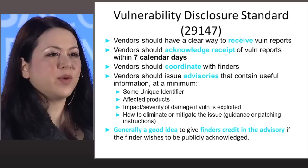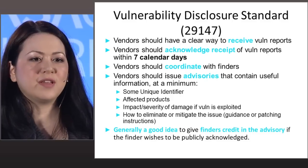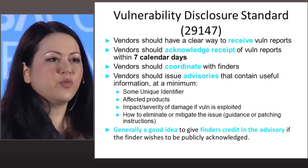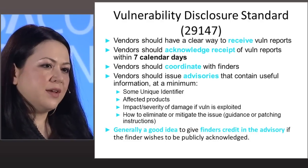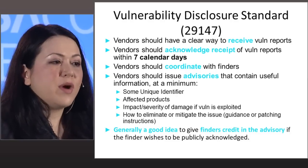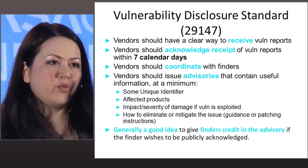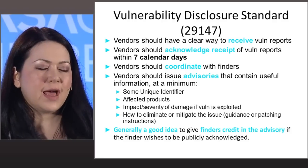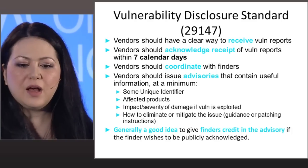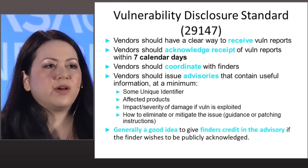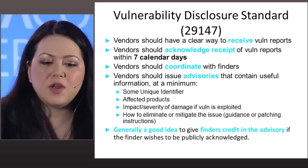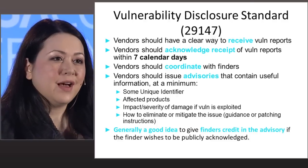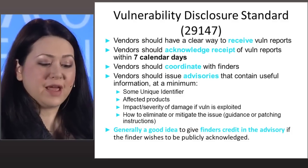In summary of 29147: vendors should have a clear way to receive vulnerability reports — make it easy for hackers to come to you. You should acknowledge the report within seven calendar days — that is the only time limit designated in either of these standards. Vendors should coordinate with finders throughout the investigation. Vendors should issue advisories with a minimum of: a unique identifier, the affected products, the impact or severity, and how to eliminate or mitigate the issue. And it's generally a good idea to give finders credit in the advisory when you release it, if they choose to reveal their names.